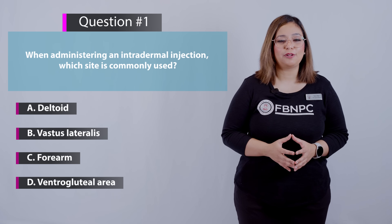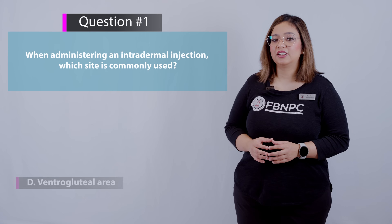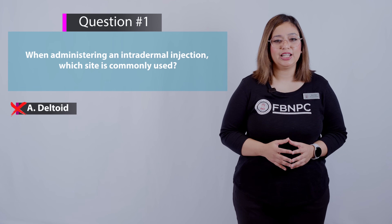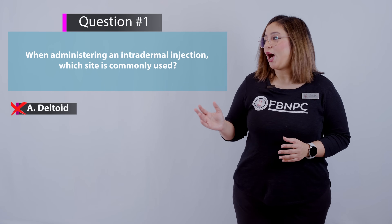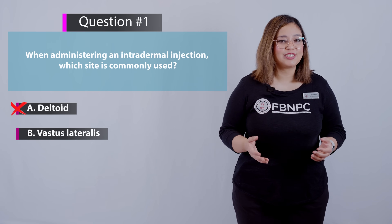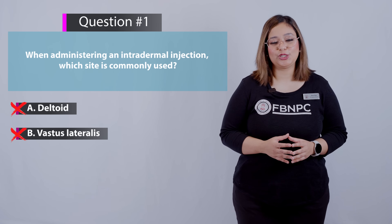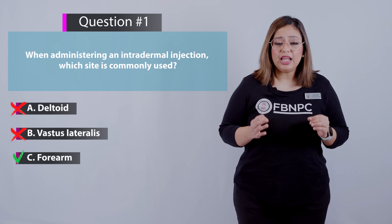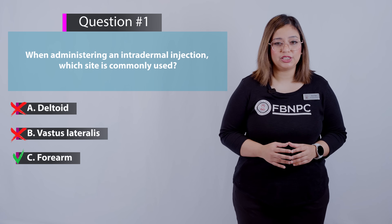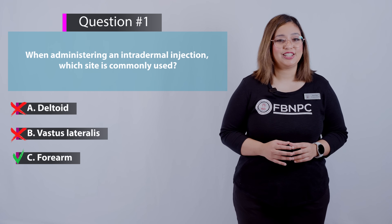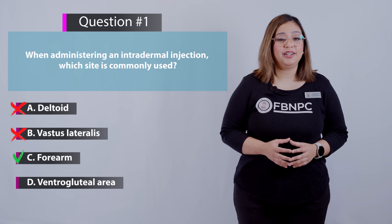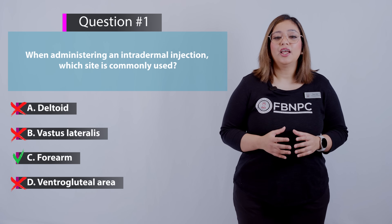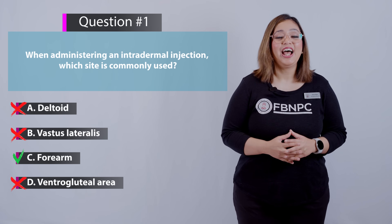Option A, deltoid — that is incorrect because the deltoid is not a common site for intradermal injection; it is more commonly used for intramuscular injection. Option B, vastus lateralis — also incorrect, as that site is used for intramuscular injection. Option C, forearm — that is correct. The inner aspect of the forearm is a common site for intradermal injections and provides good access and visibility of the injection site. Option D, ventrogluteal area — incorrect, as this site is more commonly used for intramuscular injection.